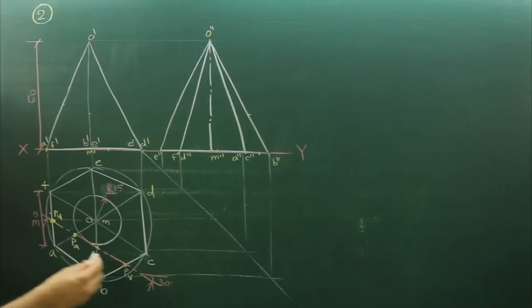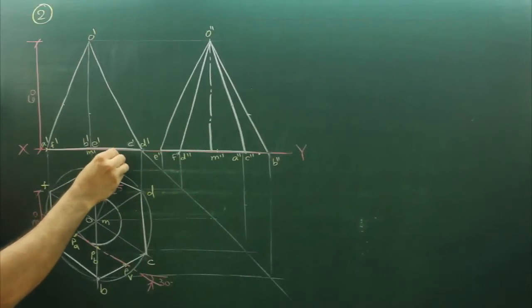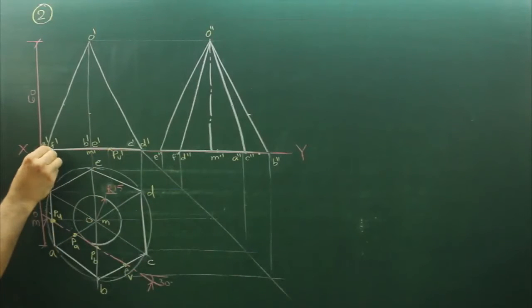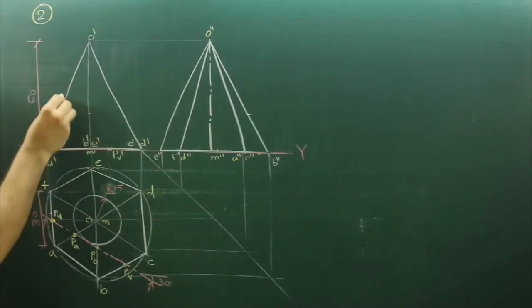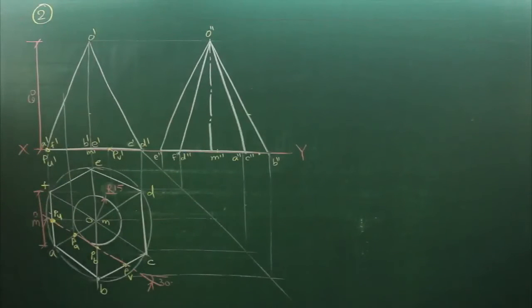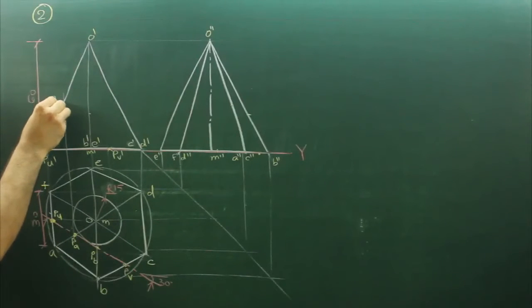If you extend this point up PV to here, this point is PV prime and this point PU prime, then you extend the point PA wherever it will dissect O prime and A prime, that is PA prime.